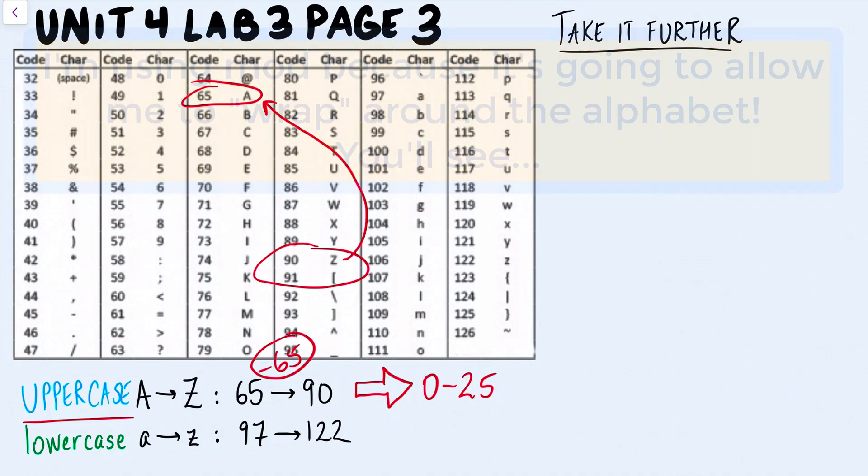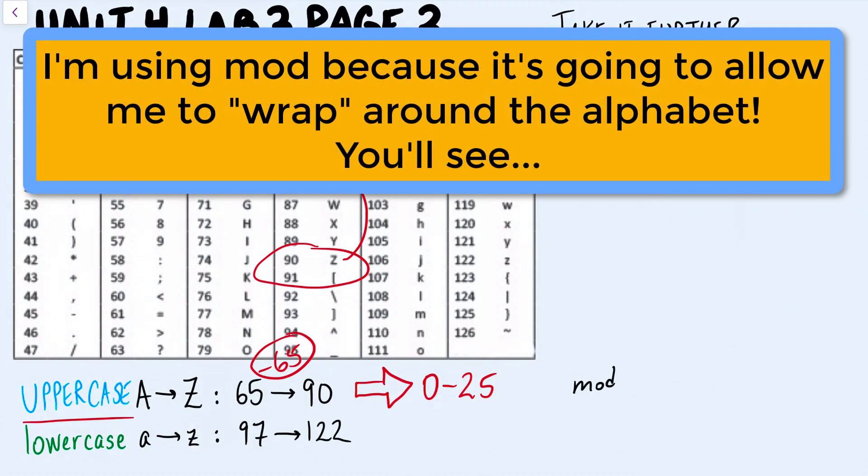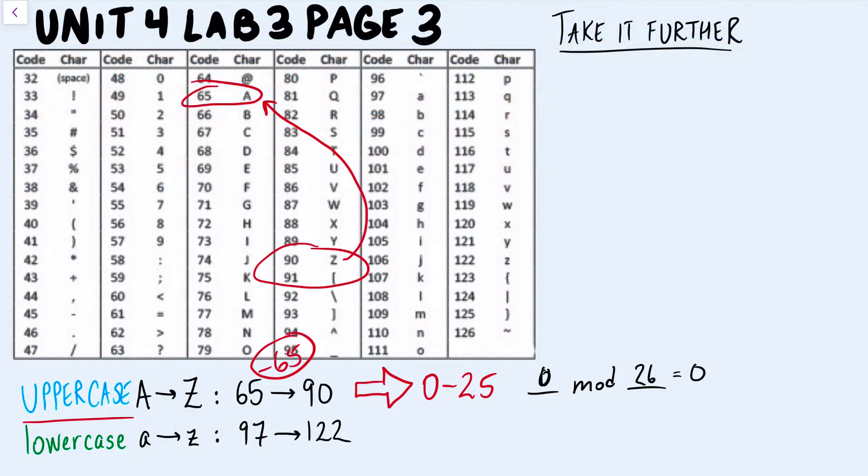And what I'm going to do is I'm going to use mod. Now, the way that mod works is that if you mod a large number by a small number, so if I do, let's say, 0 mod 26, I'm going to end up with 0. That's what the mod function will return. If I do 1 mod 26, I'm going to end up with 1.